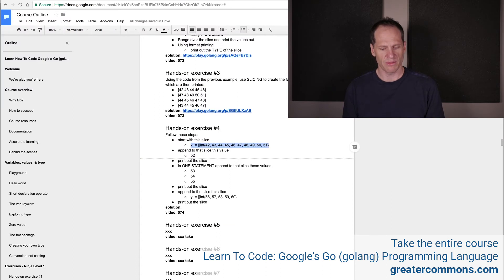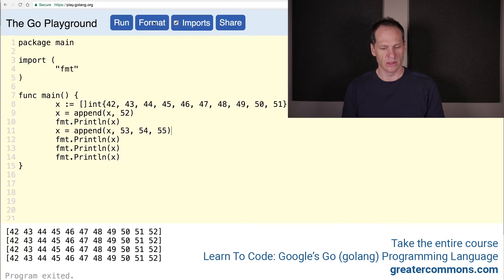And we asked for 53, 54, 55, right there. So now I'm going to format my code and run it. And we have 53, 54, 55 has been added on.